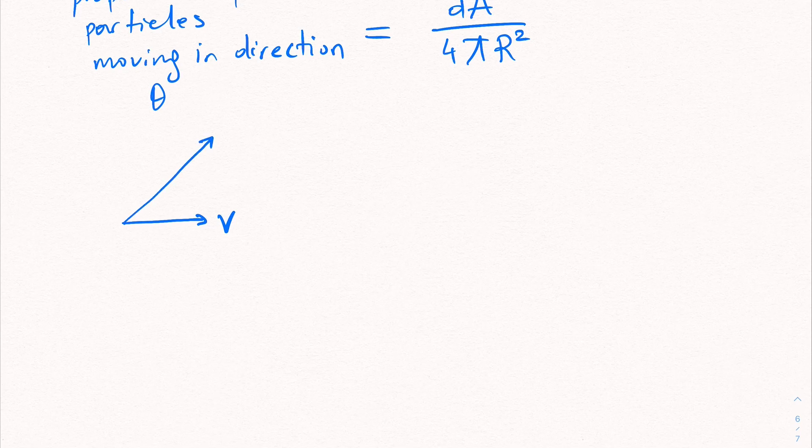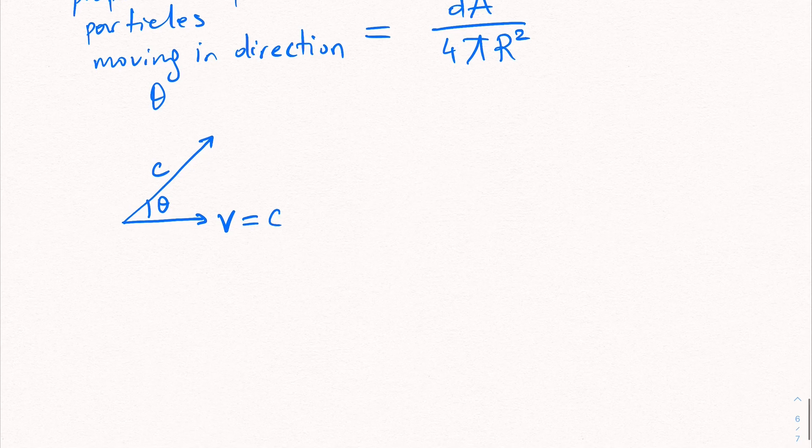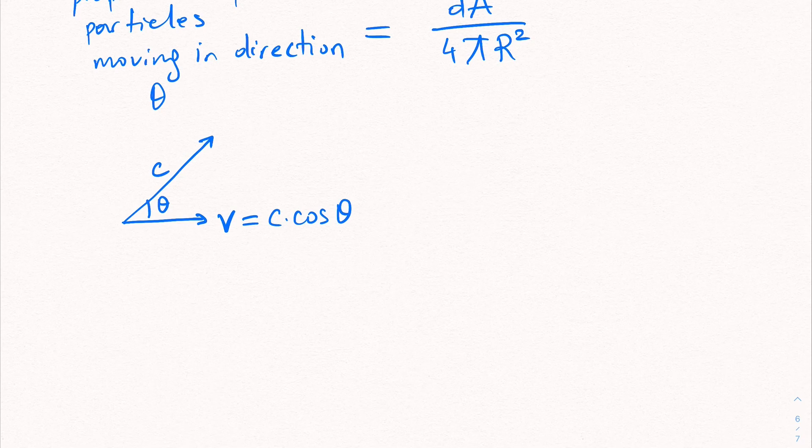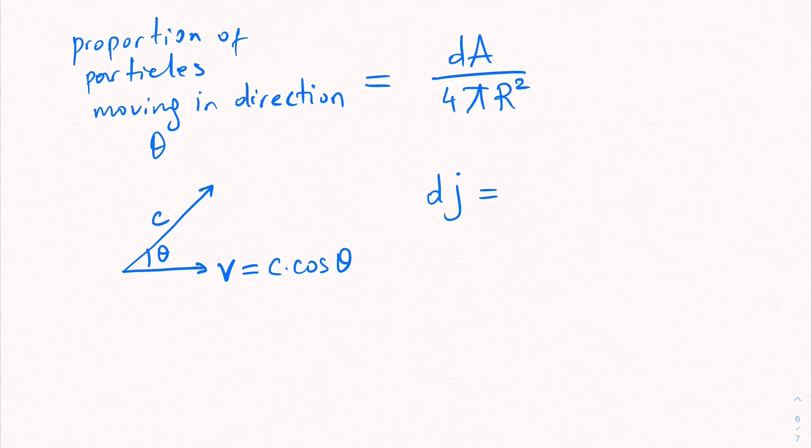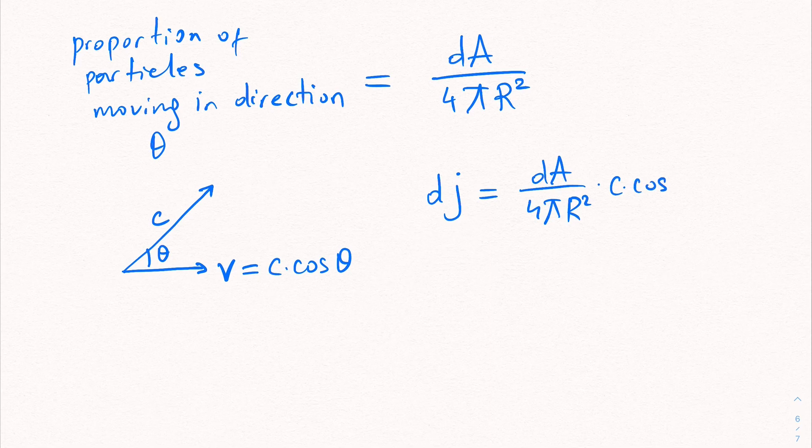Now we know that light goes with velocity c, but if you are going with an angle theta, then v is c times cosine theta. This is the velocity that is projected in the direction towards right. So our tiny bit of flux is going to be basically the proportion of particles moving in this direction times their velocity times the density.